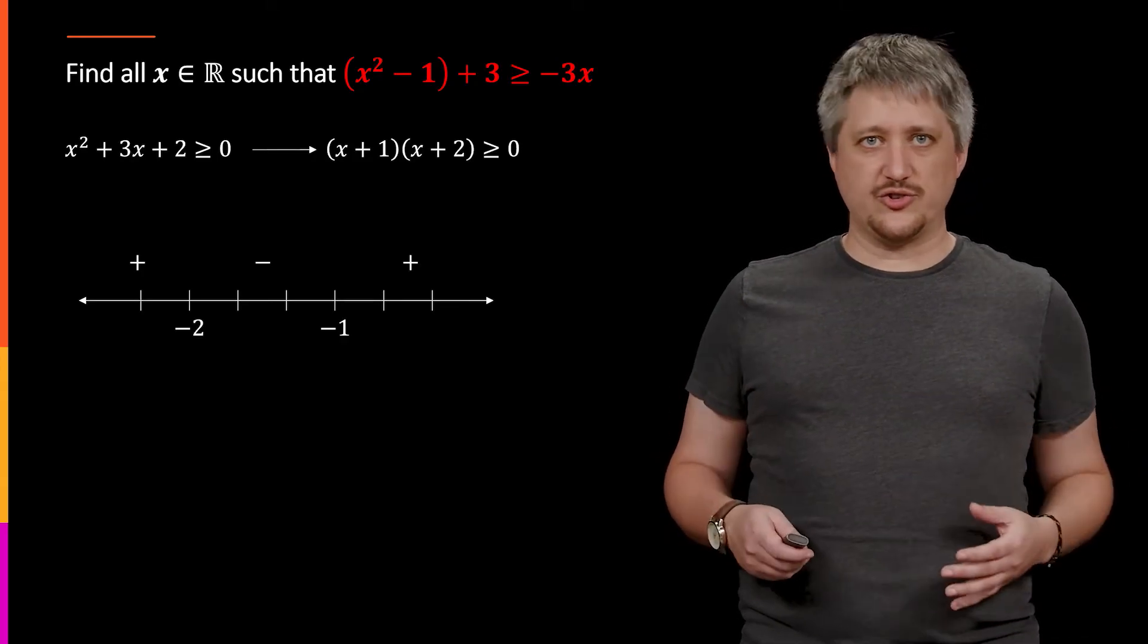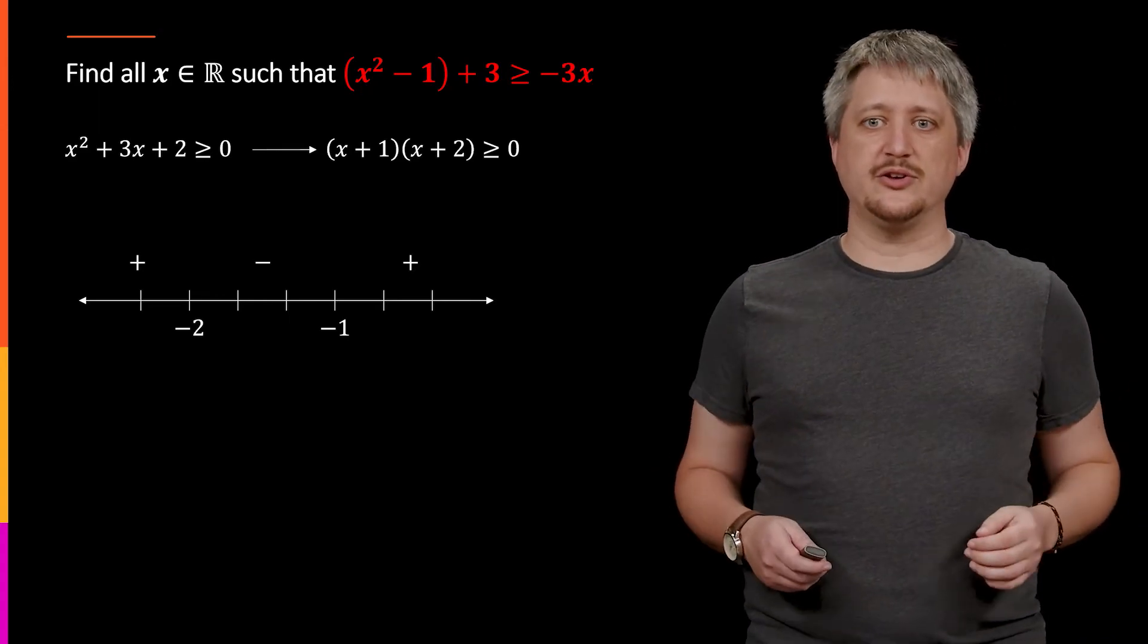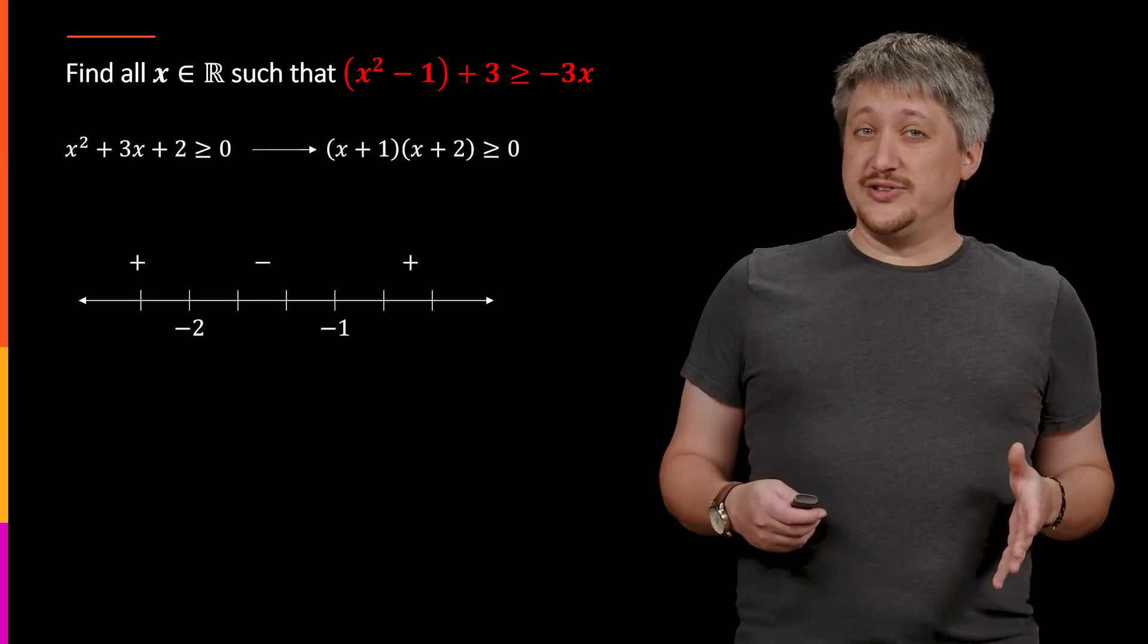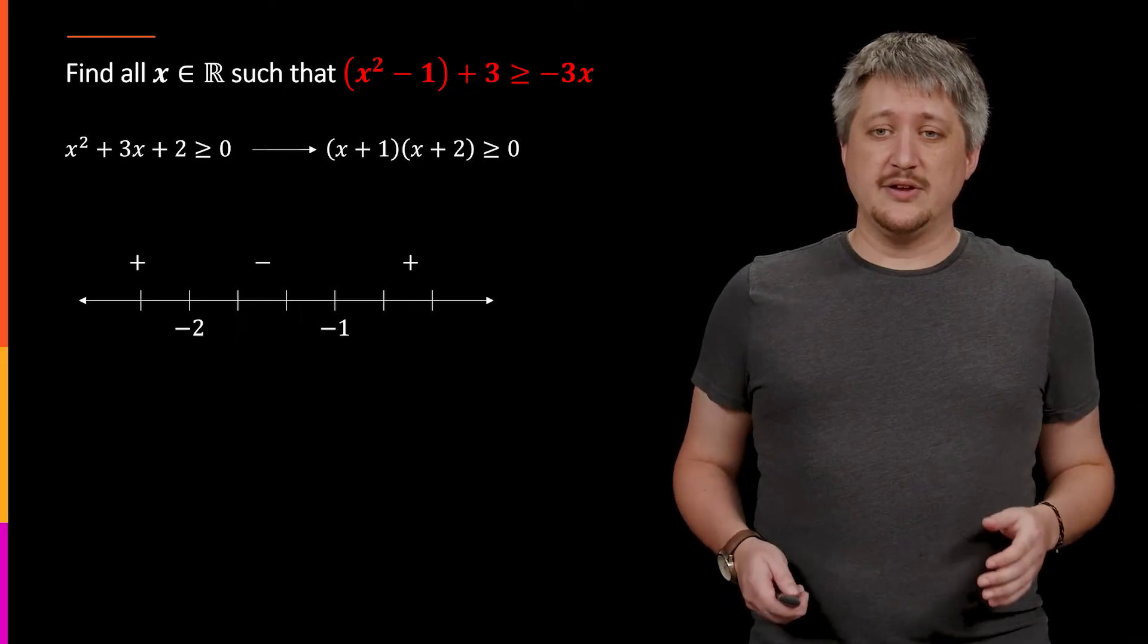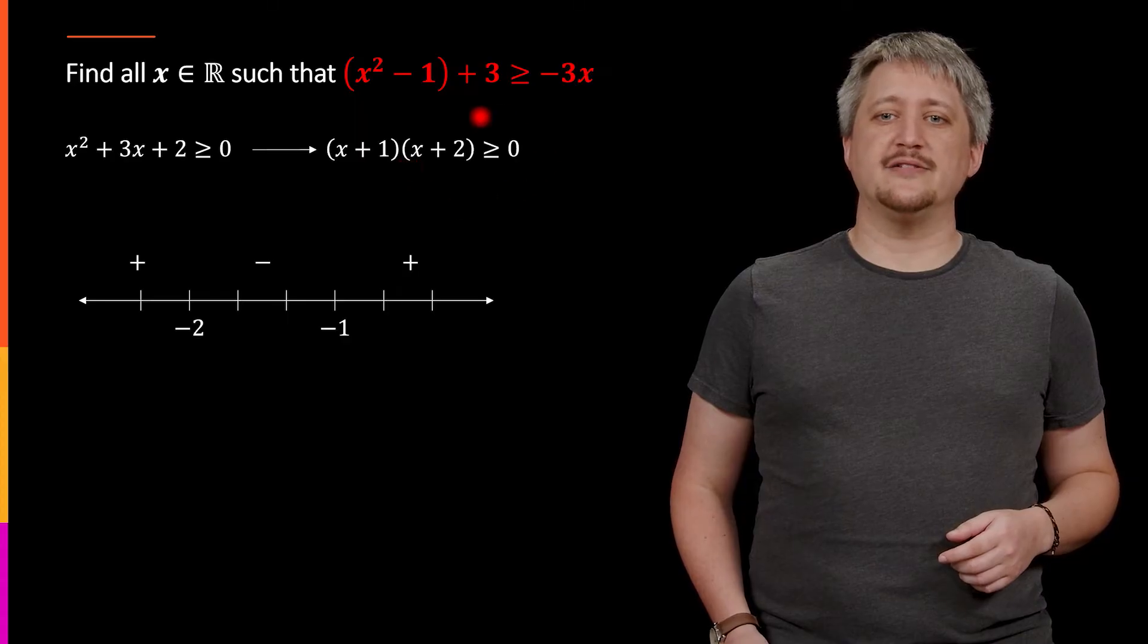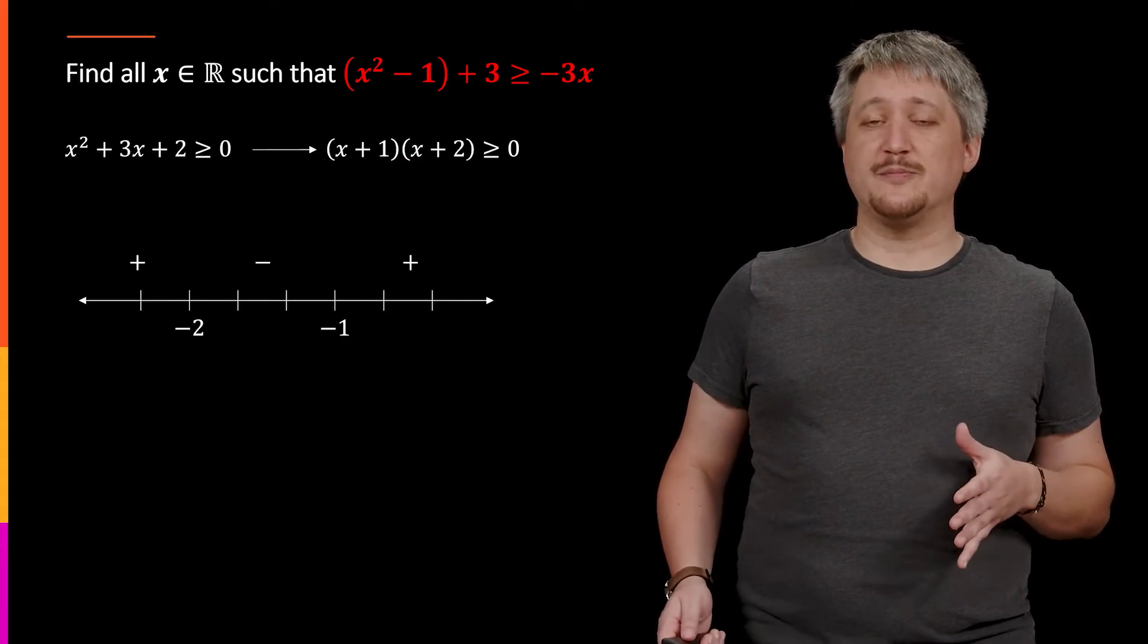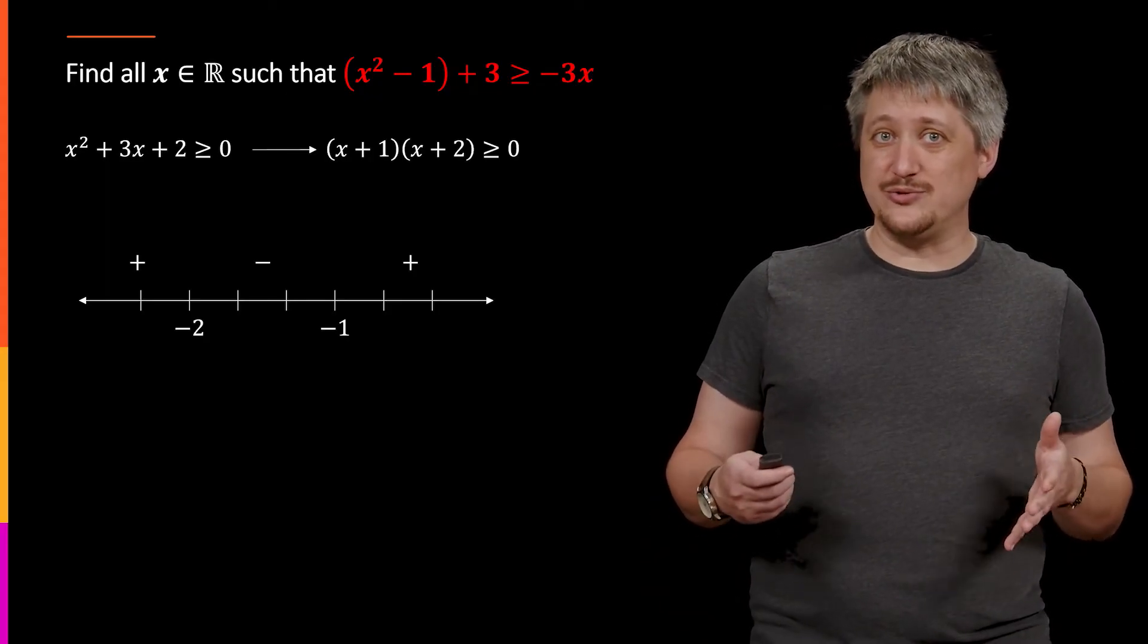So here, my zeros are negative 1 and negative 2. So I put in my negative 1, negative 2. That breaks it into these three regions. To the left of negative 2, between negative 2 and negative 1, and to the right of negative 1. And then I test some value in there for each of these things, and doing that will get me that I have positive on the outside edges and negative in between those two values.